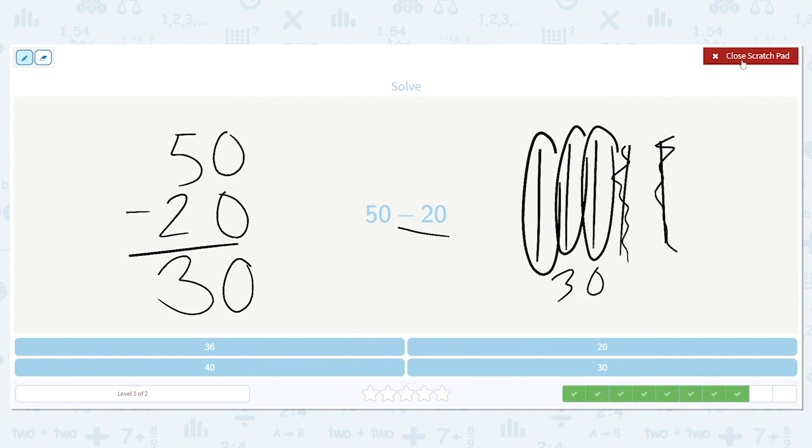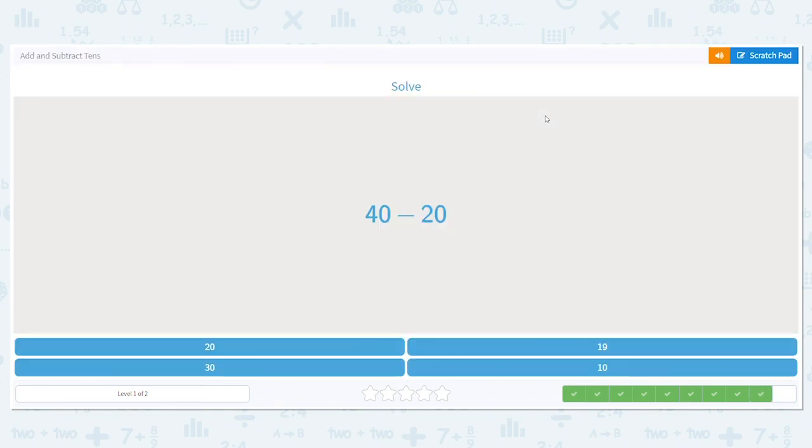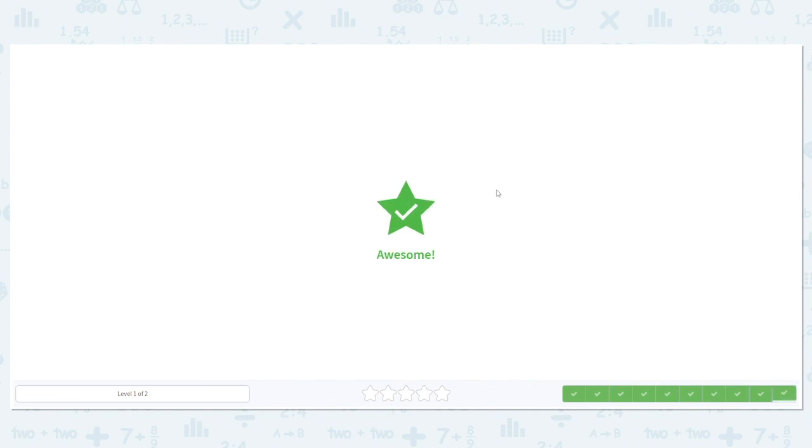So that means that's our answer. Let's try one more. 40 minus 20. We did this. What does it equal? 40 minus 20. That equals 20. Great job with this addition and subtraction. I will see you next time.